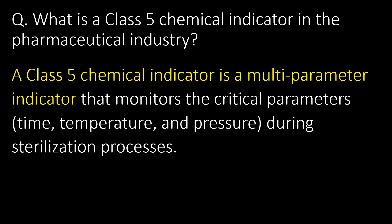What is a Class 5 chemical indicator in the pharmaceutical industry? A Class 5 chemical indicator is a multi-parameter indicator that monitors the critical parameters — example time, temperature, and pressure — during sterilization processes.